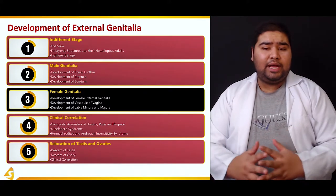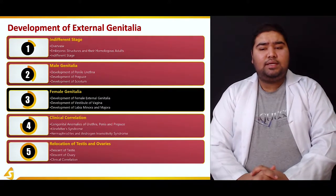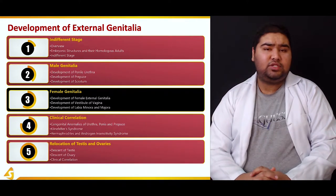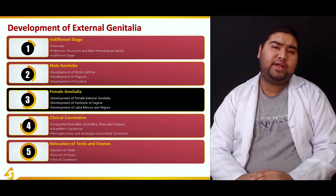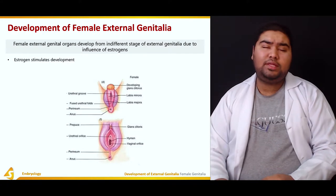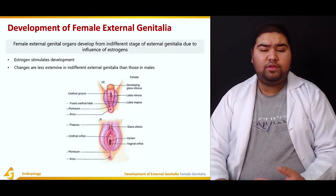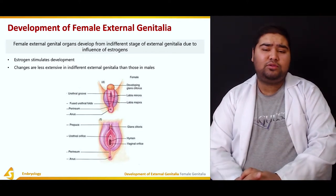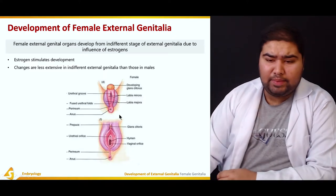The female genital organs develop from the indifferent gonad due to the influence of estrogens. In the male reproductive system there were androgens; in the female reproductive system, estrogens play a similar role. The estrogens stimulate the development of the female reproductive system, and the changes are less extensive compared to those in adult males.